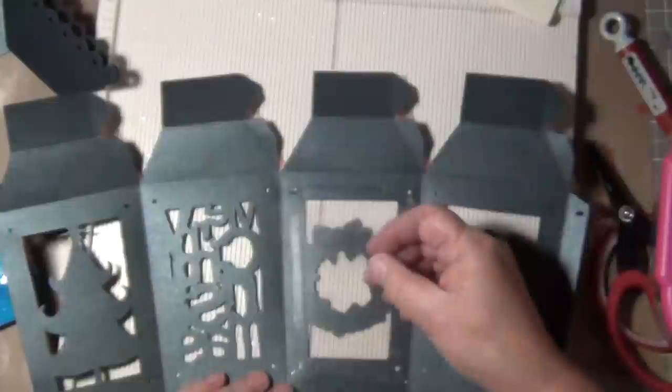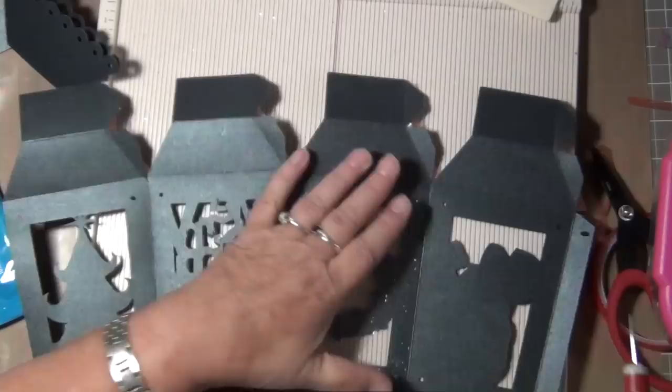I use my ATG gun to tack down the transparency window. But make sure you have the holes lined up because you will have a heck of a time getting the brad through the transparency.